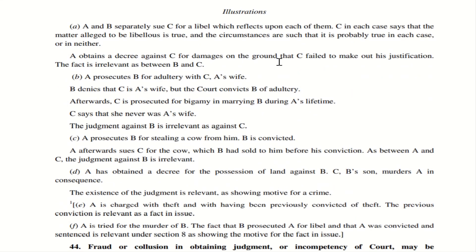Illustration A under Section 43: A and B both file separate cases against C for libel. C gives a common reply saying the matter alleged to be libelous is true. A obtains a decree against C for damages. However, that decree obtained by A against C is irrelevant as between B and C — it simply does not apply to the case between B and C.